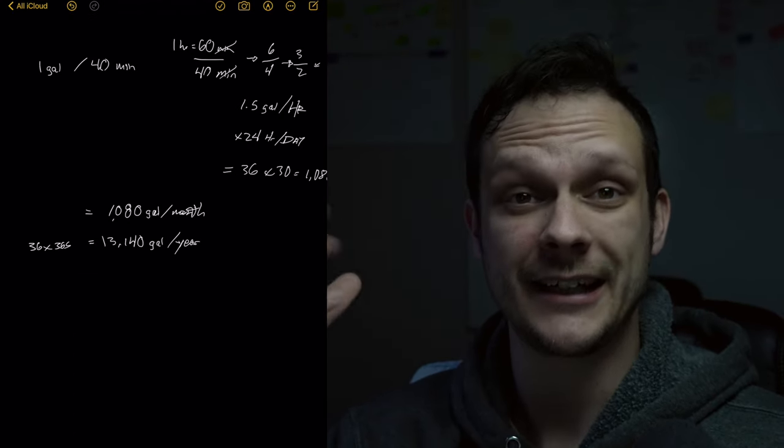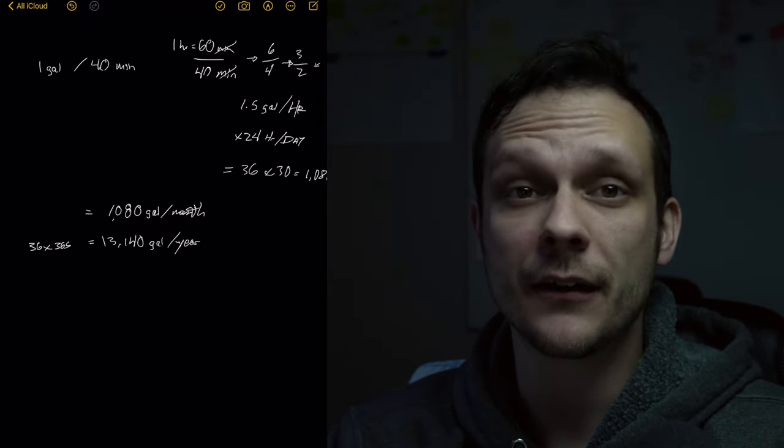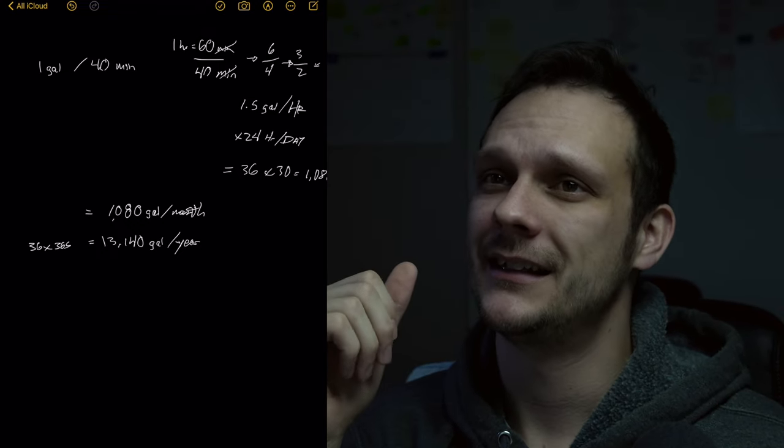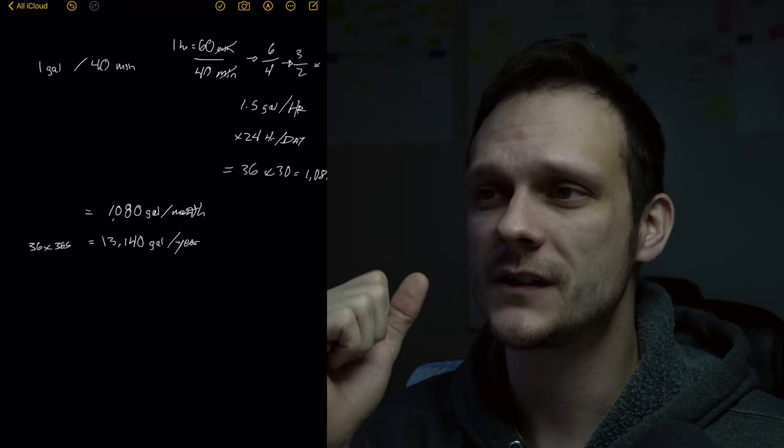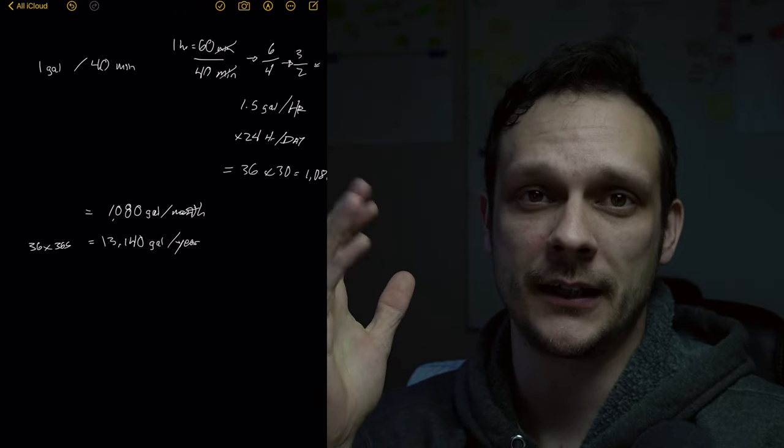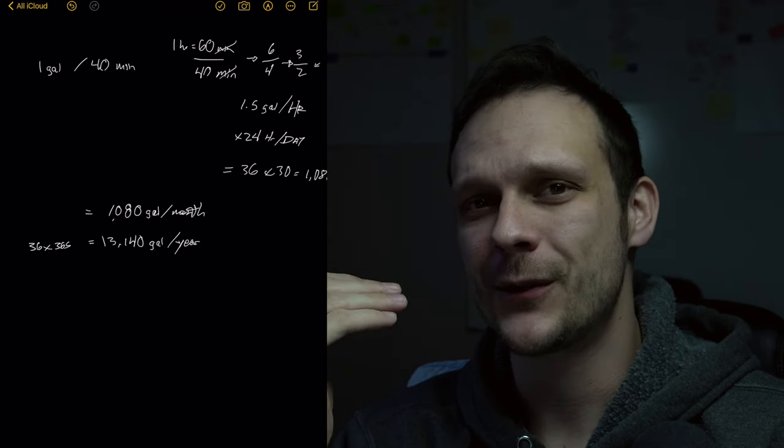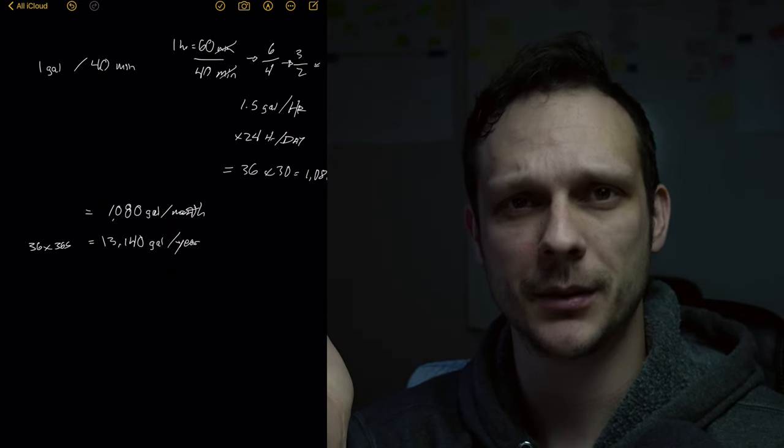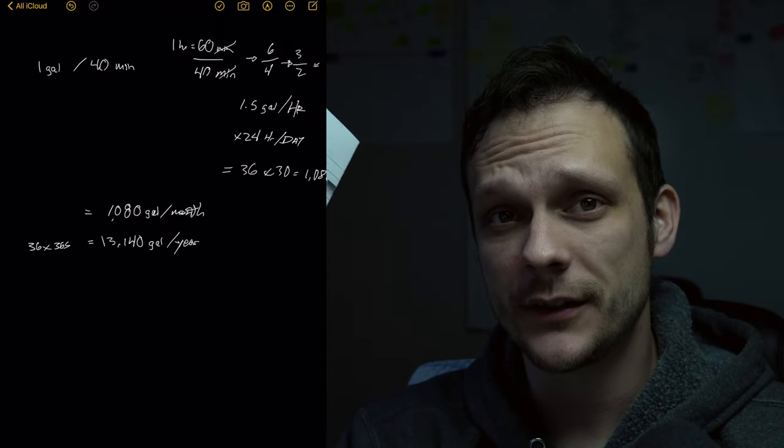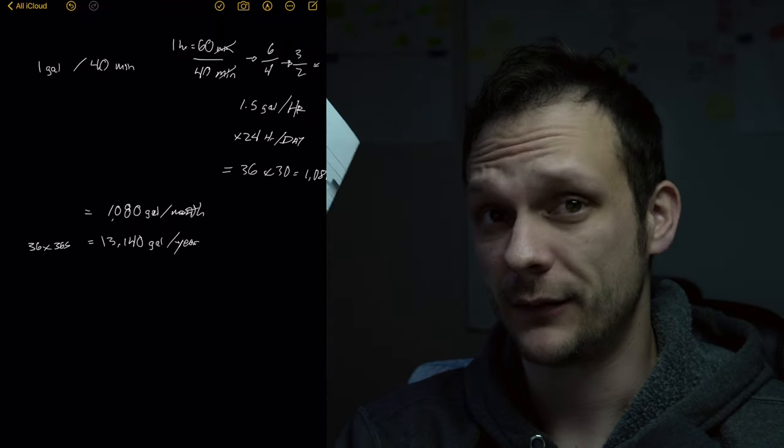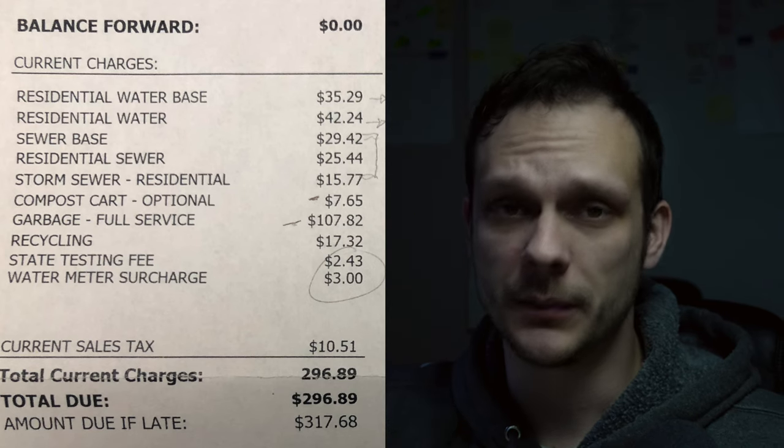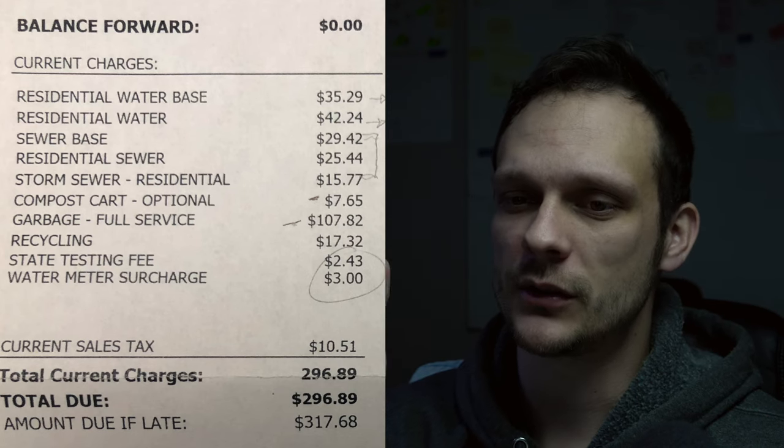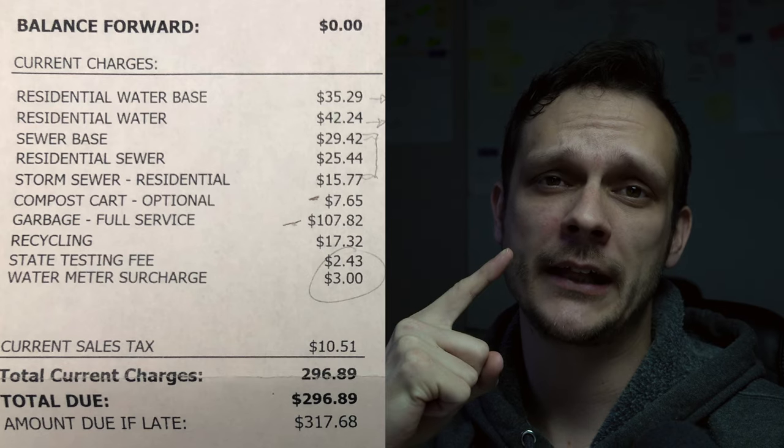Now we know how many gallons it's costing us per month and per year. Now we need to put that into financial terms. There's a couple different ways you can do that. The first one that's going to be super easy is hopefully your water company, your utility company, just tells you how much water costs per gallon. Now our city doesn't do that. The previous city we lived in, that municipality did. They said the cost of water was like one cent per gallon.